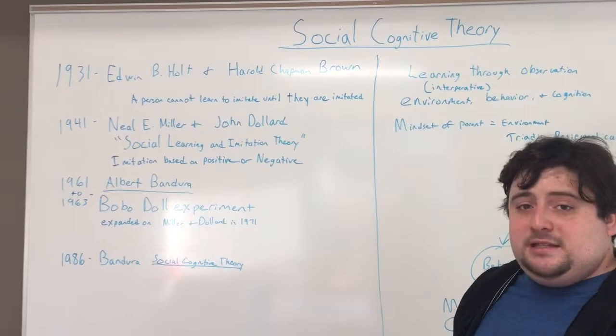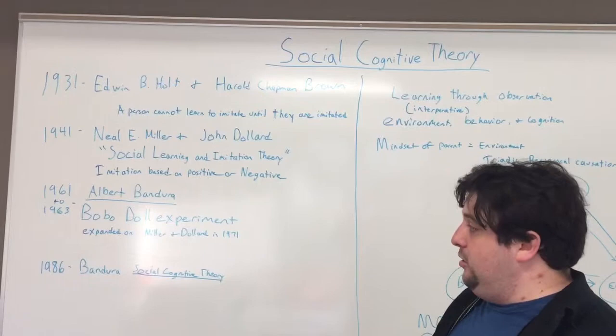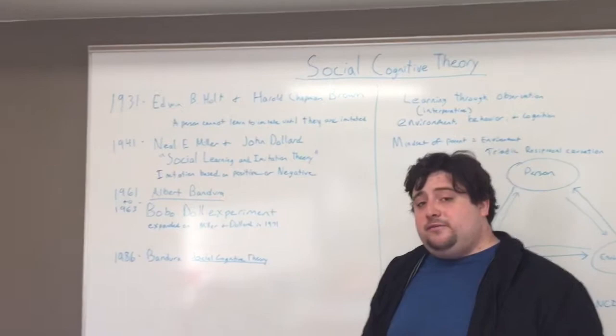This was used as a basis for the research done by Neil E. Miller and John Dollard when they developed social learning and imitation theory, which was the precursor to the social cognitive theory. They described that imitation is based on positive or negative behaviors.